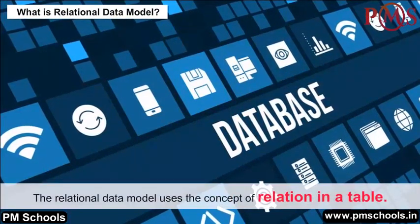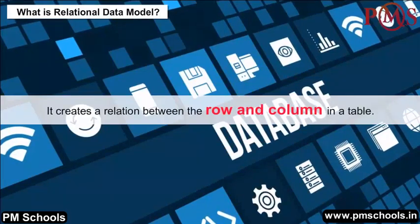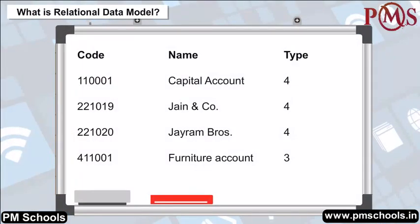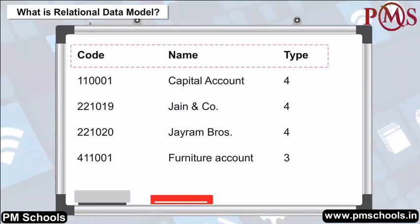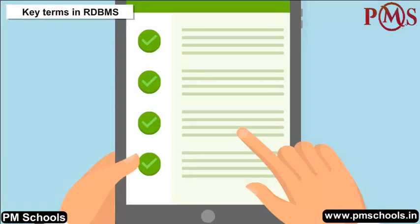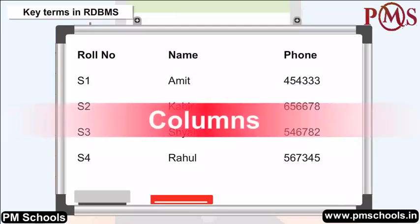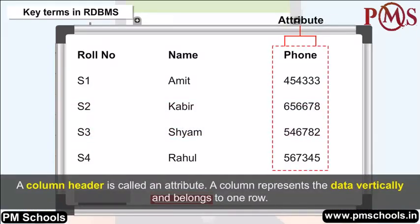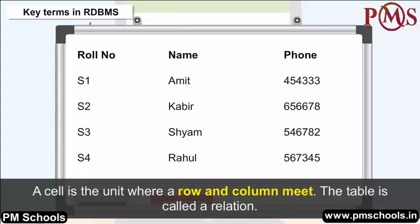Taking the example of a table called 'accounts', the table has rows and columns. The column header is the name and data is entered in rows. Key Terms in RDBMS — Row: A row is also called a tuple and represents data horizontally for a particular category. Column: A column header is called an attribute and represents data vertically. Table: A table is a collection of rows and columns; a cell is the unit where a row and column meet, and the table is called a relation.